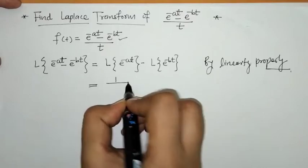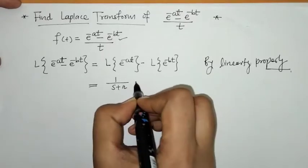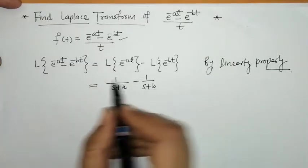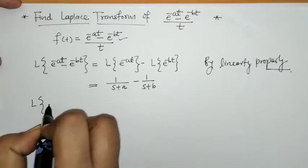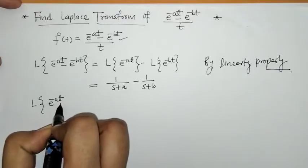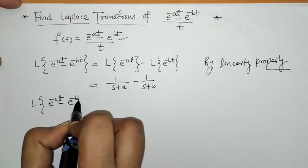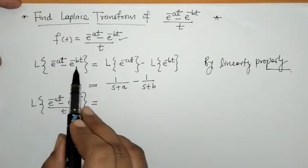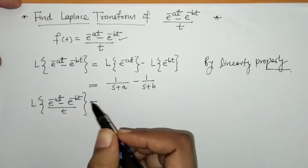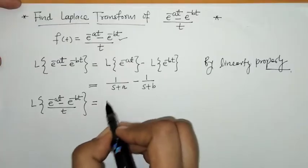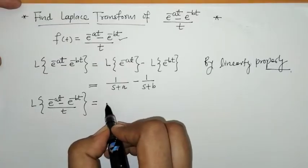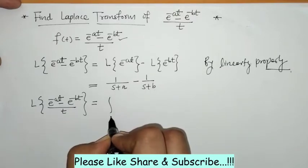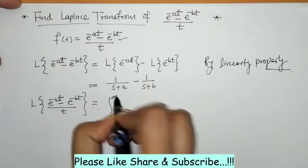The Laplace transform of the numerator is 1/(s+a) - 1/(s+b). Now, since we want the Laplace of (e^(-at) - e^(-bt))/t — that is, the function divided by t — we have to apply the effect of division by t.